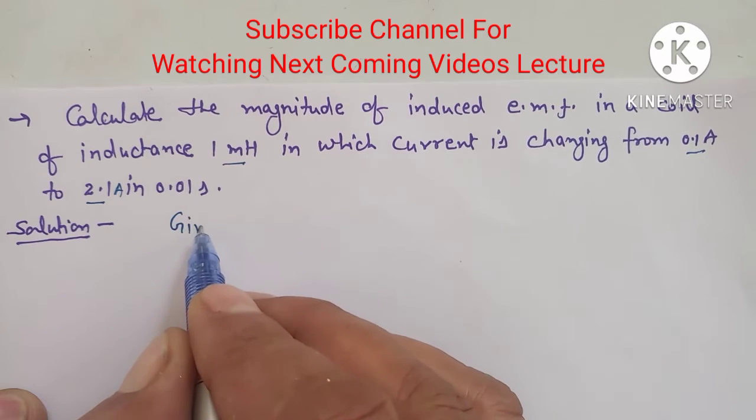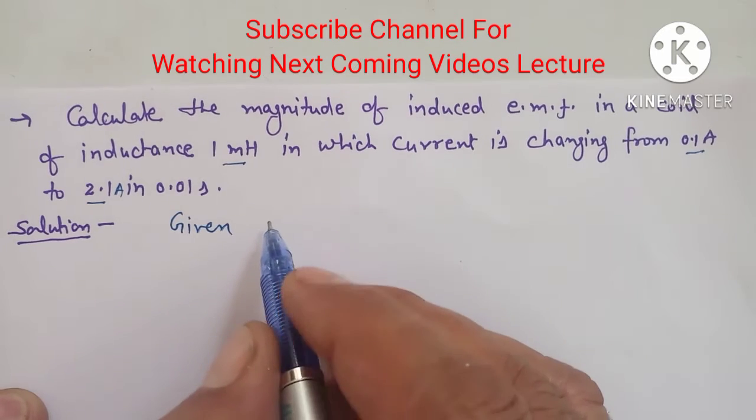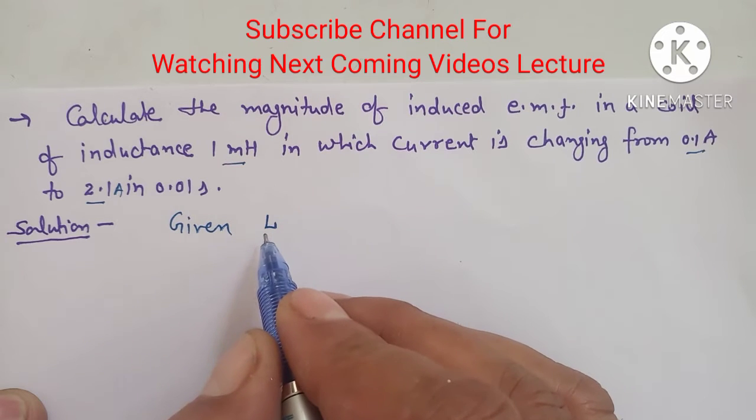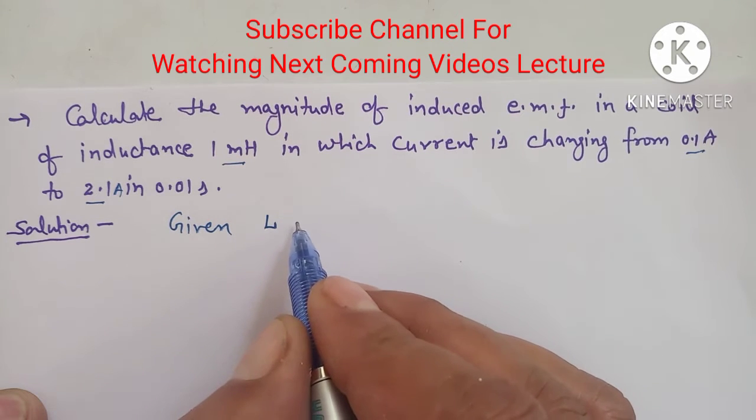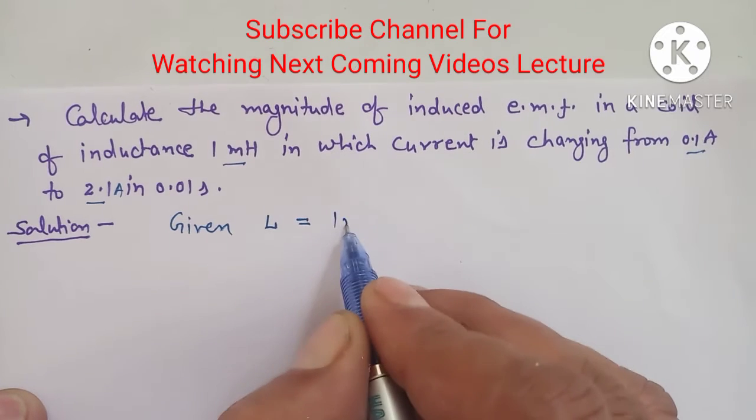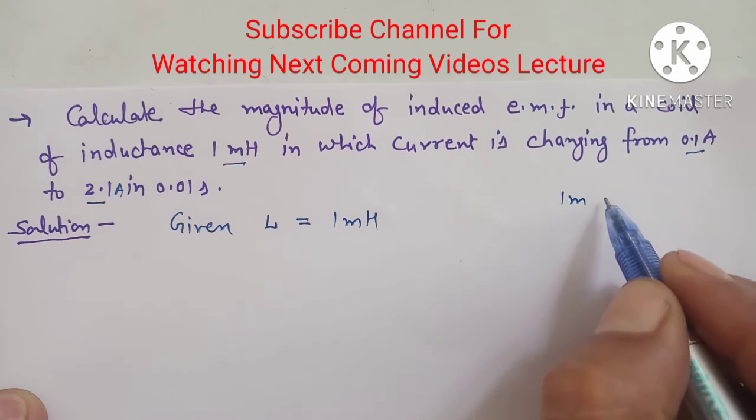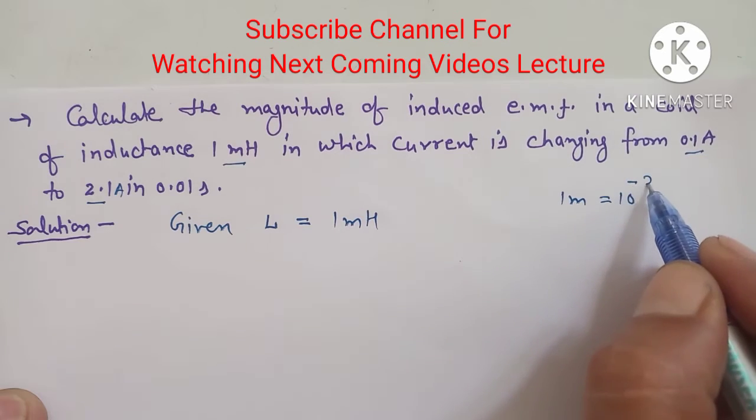First of all, we are going to write which we have given. Here in this problem we have given inductance, represented by L. This is equal to 1 mH and we know that 1 mH equals 10 raised to power minus 3.